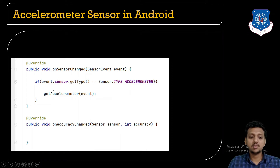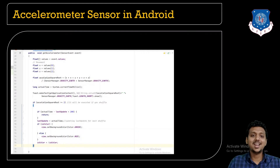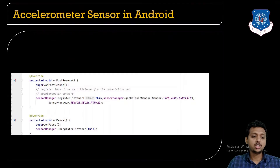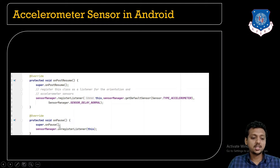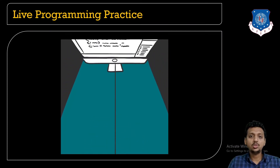In onSensorChanged, we need to check whether the sensor type is equal to TYPE_ACCELEROMETER or not. If it is the accelerometer, we get the event and call the getAccelerometer method. In onPostResume we register our sensor using sensorManager.getDefaultSensor(TYPE_ACCELEROMETER) with SENSOR_DELAY_NORMAL. In onPause, you just need to unregister your sensor.